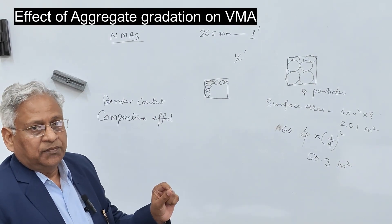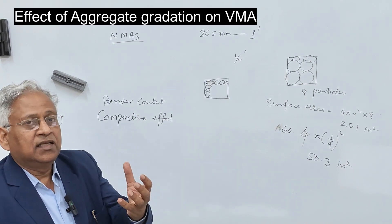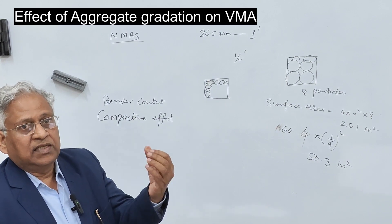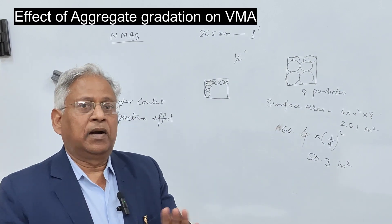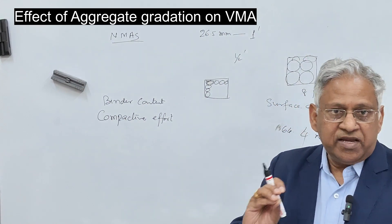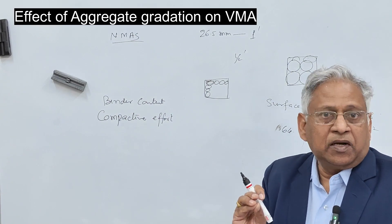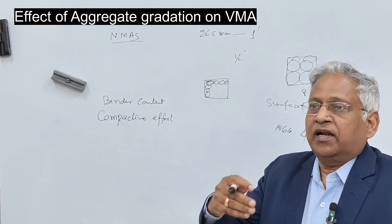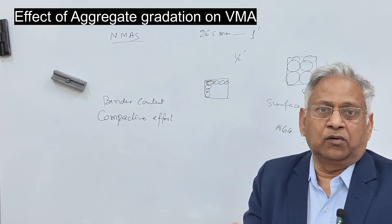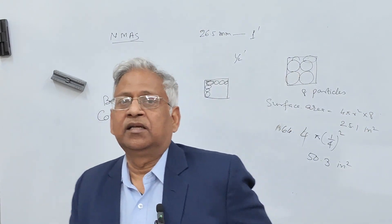VMA also depends on aggregate gradation. If you have more fine aggregate, surface area increases; if you have more coarse aggregate, surface area is less, and therefore binder content will change. When binder content changes, remember the requirement of air voids remains the same — 4% or 3.5%. So if you are decreasing or increasing binder content, VMA should decrease or increase accordingly. That is how you can control VMA in a bituminous mix.